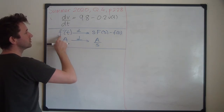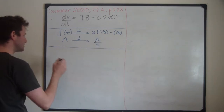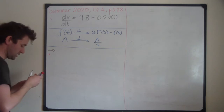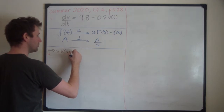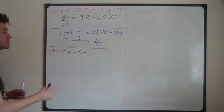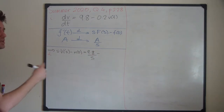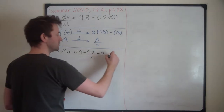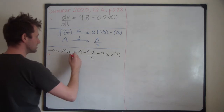We're working with V, so V'(t) gets sent to s times big V(s) minus little v(0). Little v(0) is given in the question and it's just zero. Taking the Laplace transform of both sides: dV/dt becomes s times big V(s) minus little v(0), equal to 9.8 over s, minus 0.2 times big V(s). Then we apply the initial condition v(0)=0, so that term drops out.